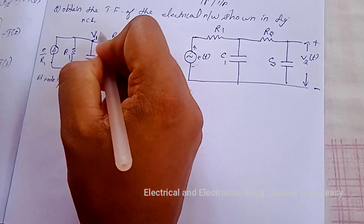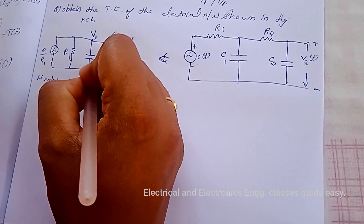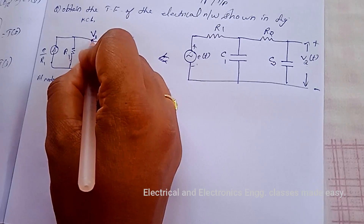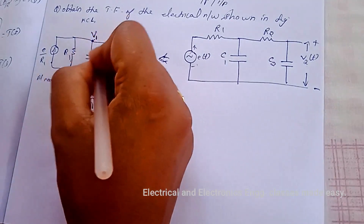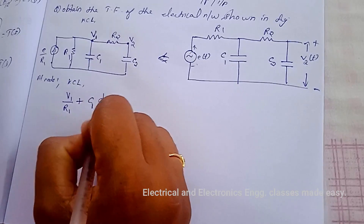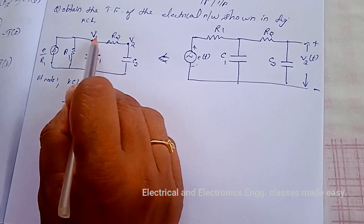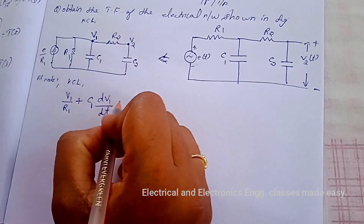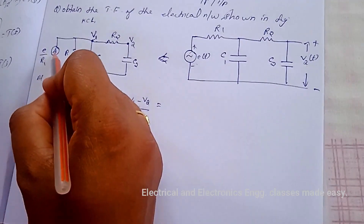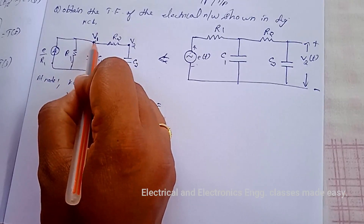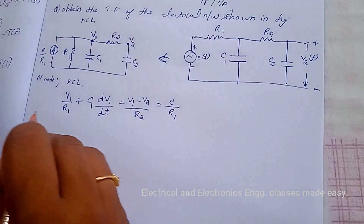At node 1, applying Kirchhoff's current law, all currents summing to the node: v1/R1 plus C1·dv1/dt, plus the current through R2 which is (v1 - v2)/R2, and that is equal to the source current e/R1.